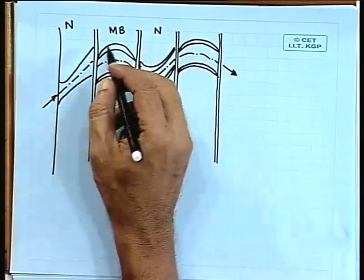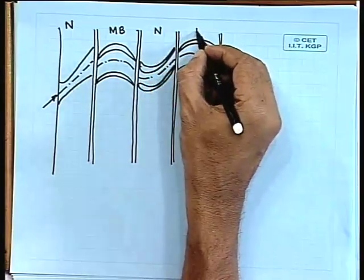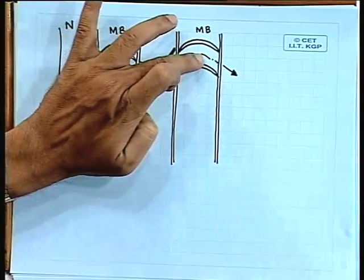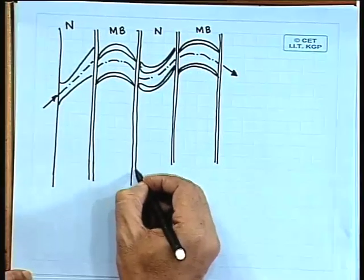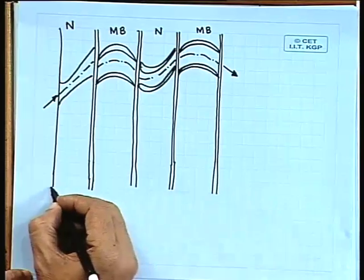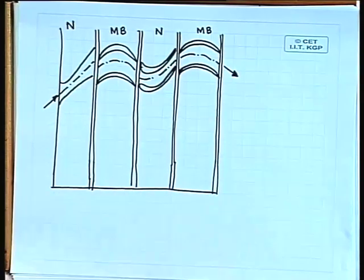In pressure compounding, there is a pressure drop in the first nozzle; in the moving blade row there is no pressure drop as it is impulse staging; then again a pressure drop in the second nozzle; then no pressure drop in the second moving blade row. The picture becomes clear when we draw how pressure and velocity vary along all the elements of the turbine stage.